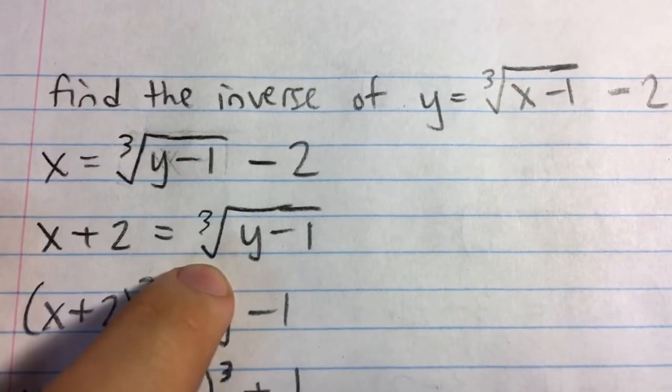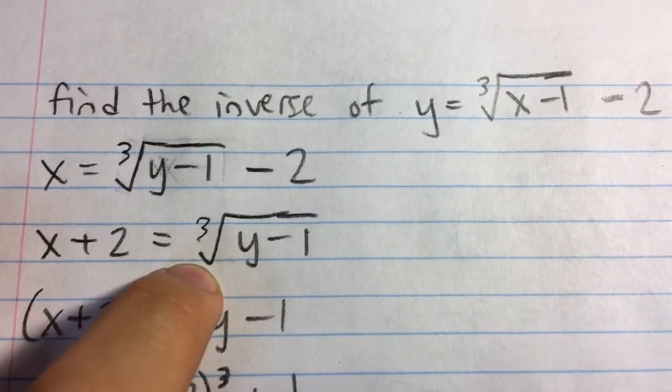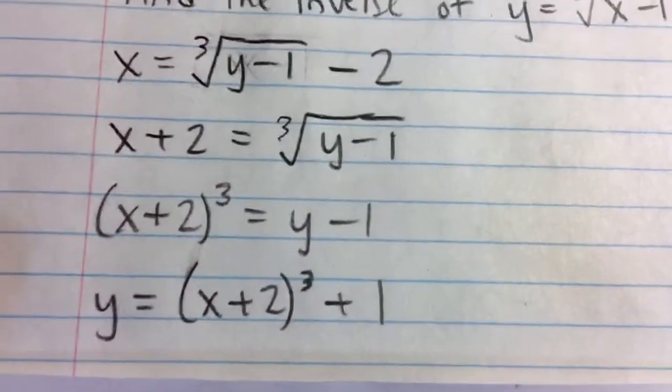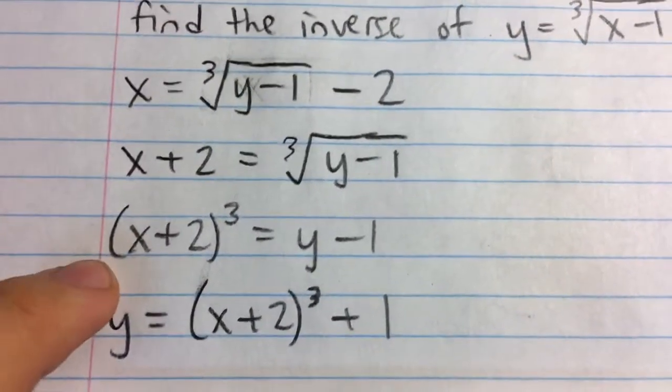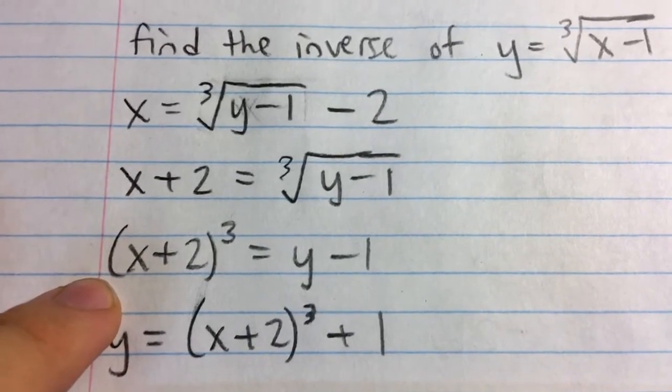And so, what I'm going to do is cube both sides, because the cube of the cube root will cancel out, and all I'll be left with is y minus 1. On the left side, we have x plus 2 cubed.